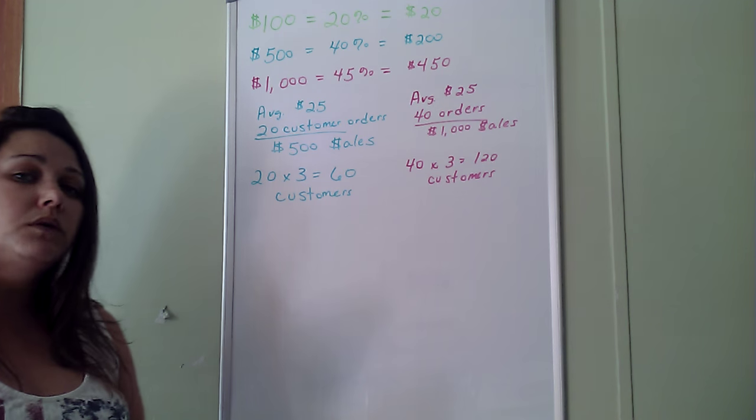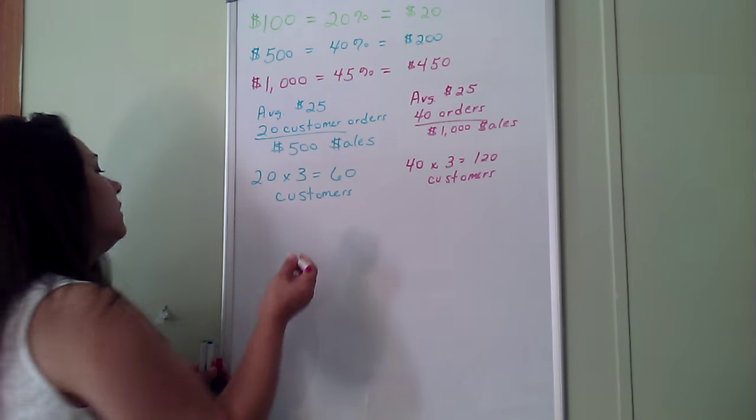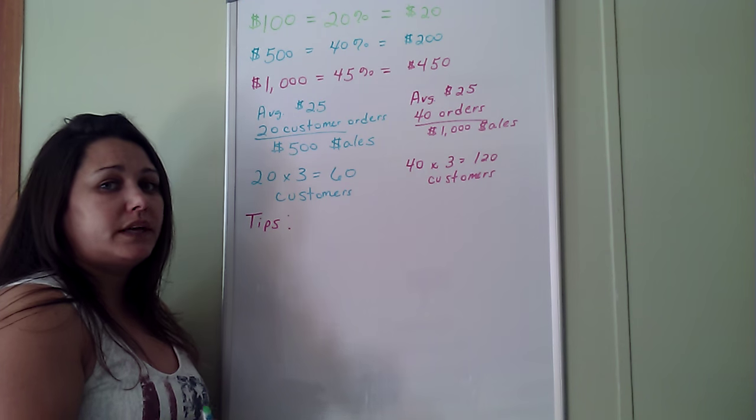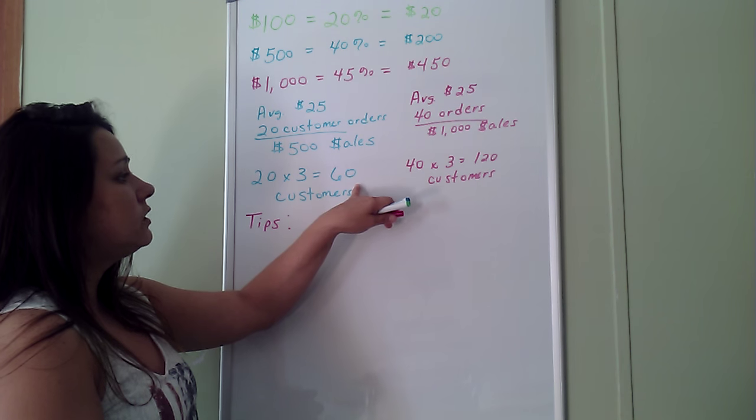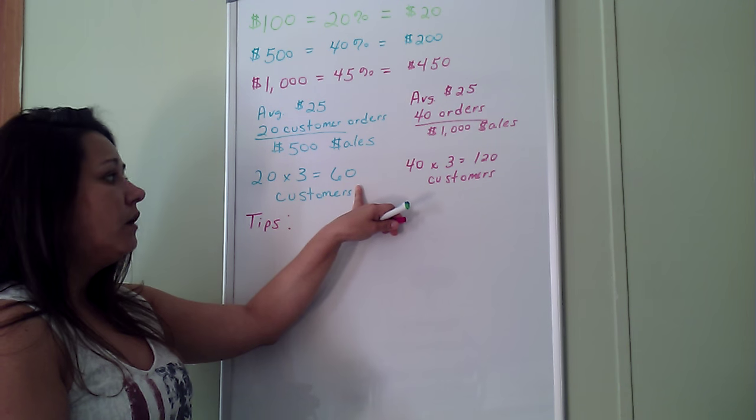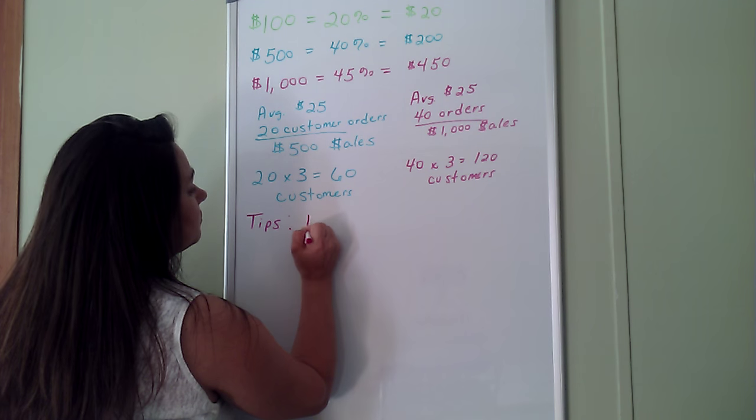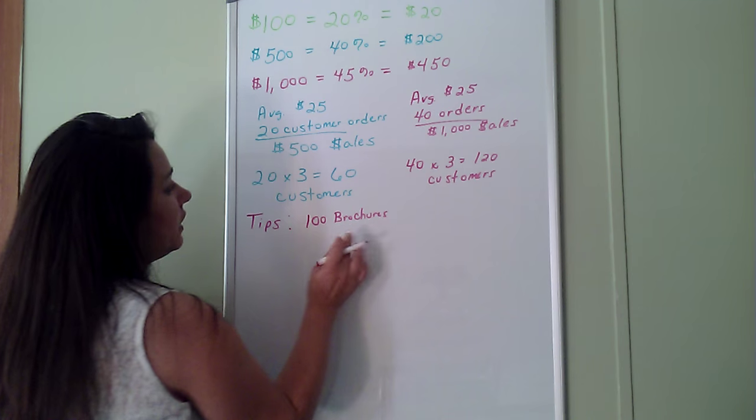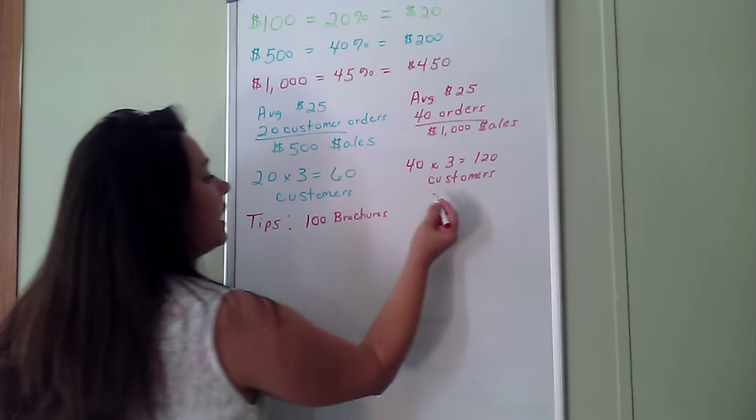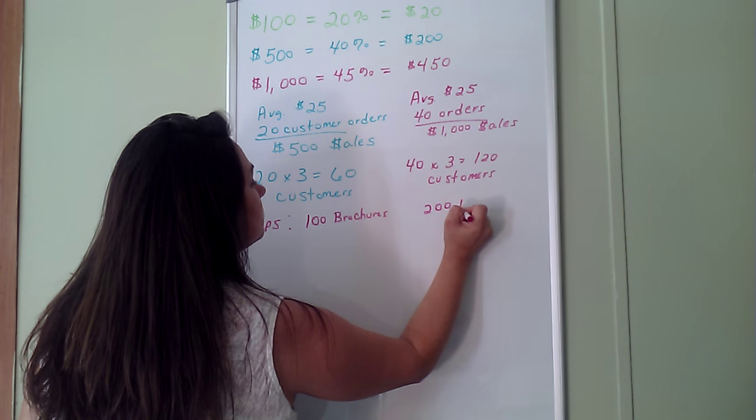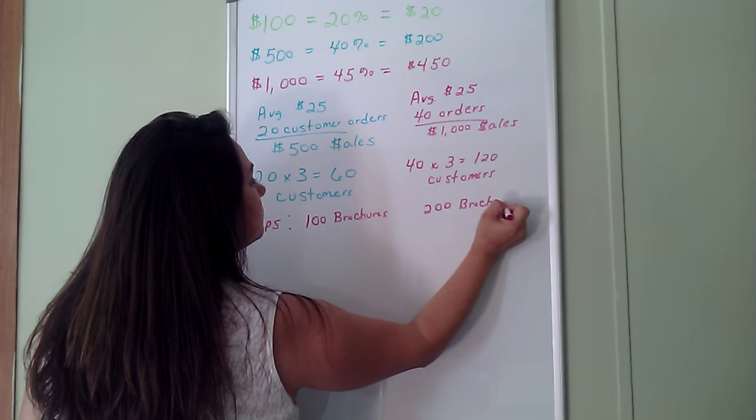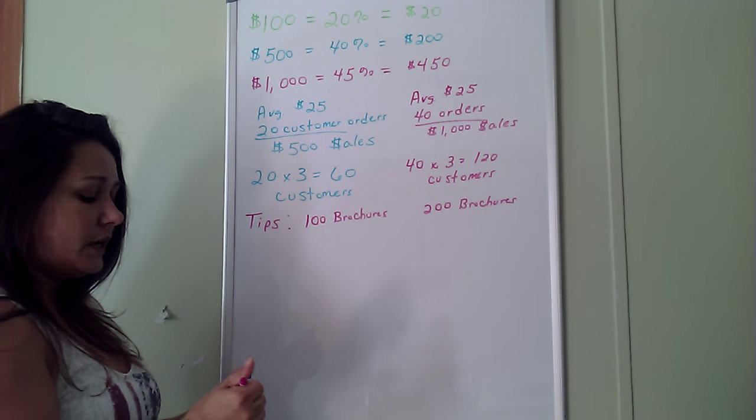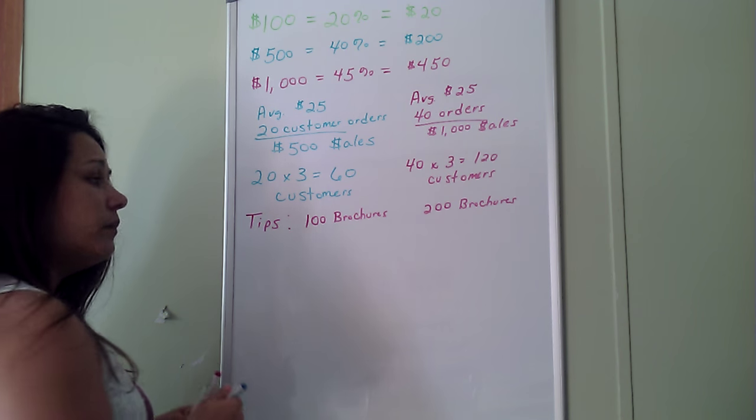So let's talk about some tips. What would we do to get this? You want to look at your schedule and look at your brochures and how many you're ordering. If you're wanting to do 60 customers every two weeks, then you definitely want to buy 100 brochures. If you're looking for 120, then you would want to have 200 brochures. With this, you will pass out your brochures every day. You don't want them sitting in your house.